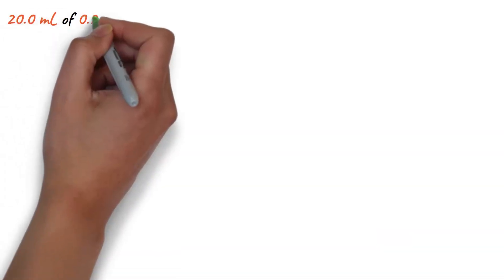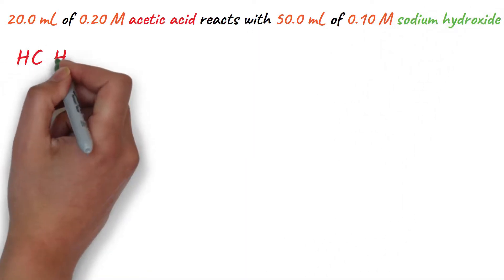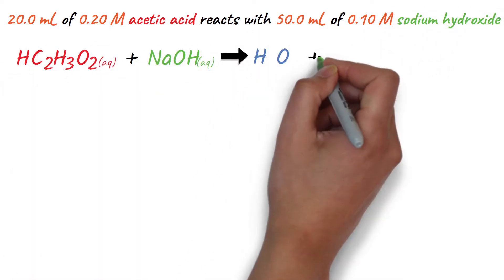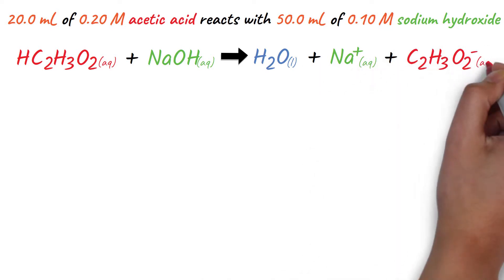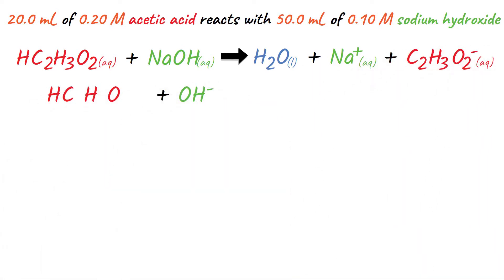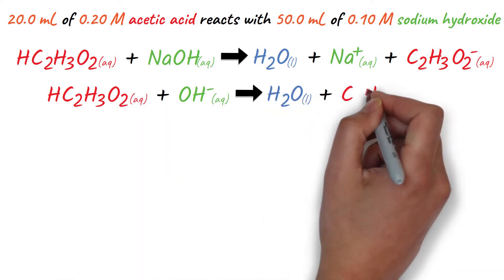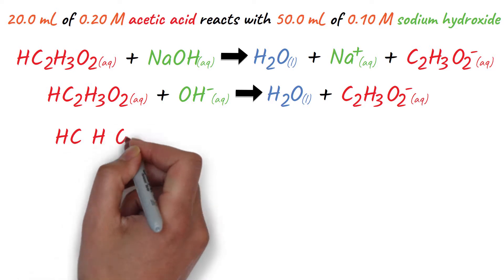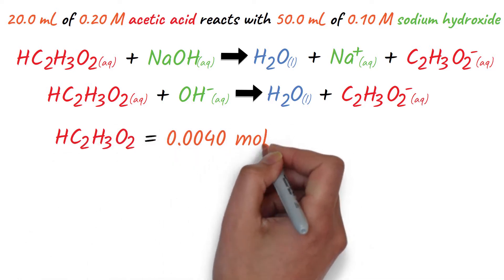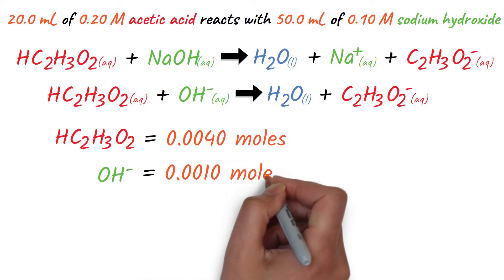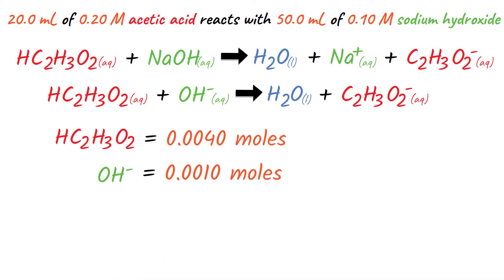Now, we can look at what concentration of products are left after the reaction occurs. Imagine we have 20 milliliters of 0.2 molar acetic acid, and we react it with 50 milliliters of 0.1 molar sodium hydroxide. Let's write the net ionic equation. We can ignore the sodium ion again because it is a spectator. We can then calculate the initial concentrations of everything else. For acetic acid, we have 0.004 moles, and the hydroxide ion, we have 0.005 moles. Thus, the acetic acid is the limiting reagent and will only neutralize 0.004 moles of hydroxide ion, leaving us with 0.001 moles of hydroxide and 0.004 moles of acetate.